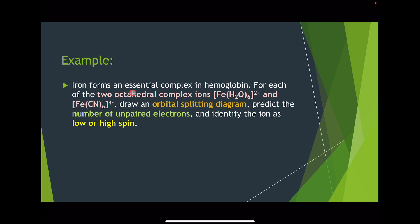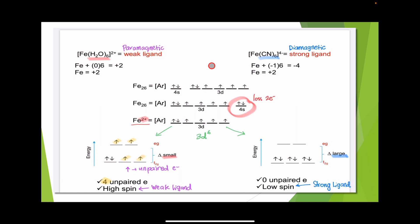Iron forms an essential complex in hemoglobin. For each of the two octahedral complex ions — the hexa-aqua-iron(2+) ion and the hexacyanoferrate(2-) ion — draw an orbital splitting diagram, predict the number of unpaired electrons, and identify the ion as low or high spin. This refers to the crystal field diagram for weak or strong field ligands.